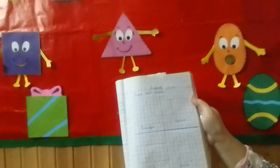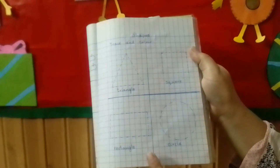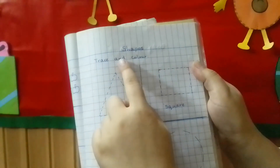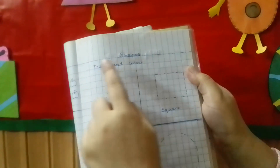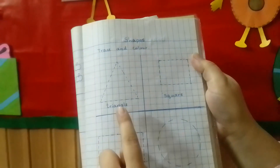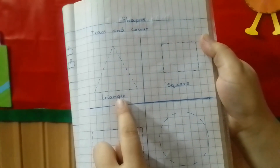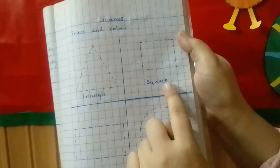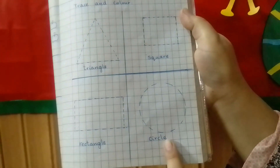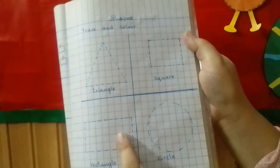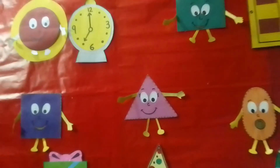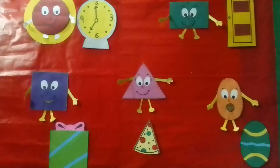Dear children, your mama will prepare this page for you. Here is written: shapes, trace and color. Your mama will write down the date and the day. Which shape is this? This is a triangle. And which shape is this? This is a square. This is a rectangle. And this is a circle. Trace all the shapes and color them beautifully. Okay. Thank you. Allah Hafiz. Have a good day. Bye.